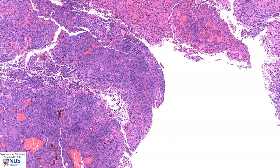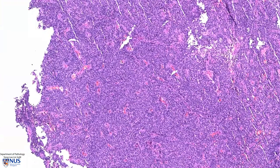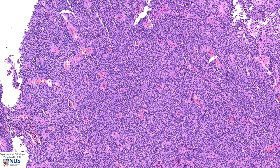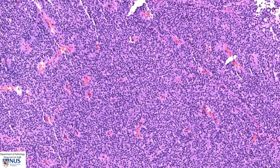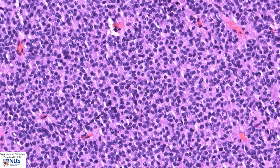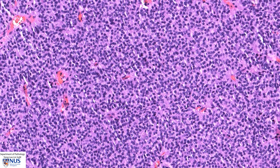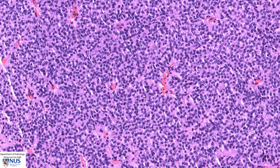Here is another example of a pituitary neuroendocrine tumor, and you can see that this tumor has a more sheet-like architecture. Again, the cells have a very monotonous look with round nuclei and moderately abundant cytoplasm. Again, we are able to see many small vessels coursing through the lesional tissue.